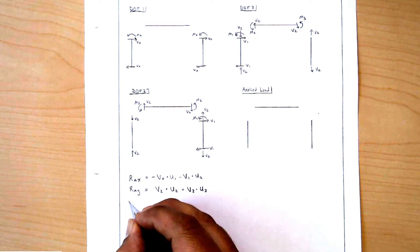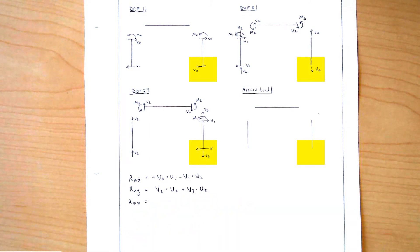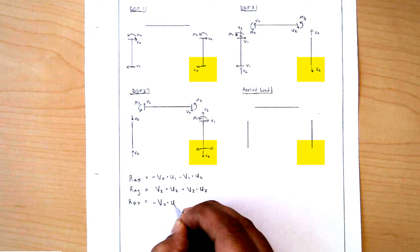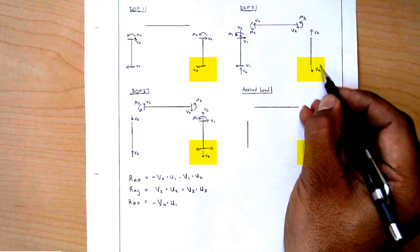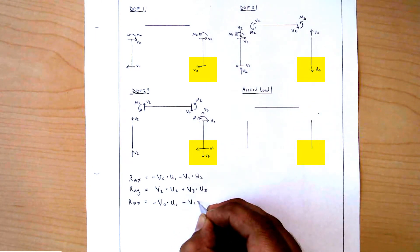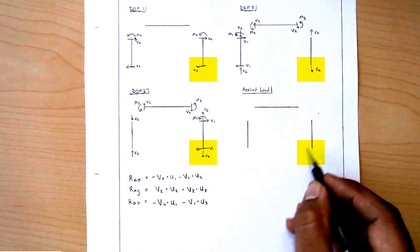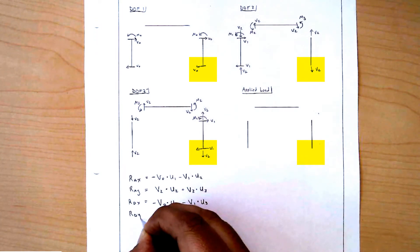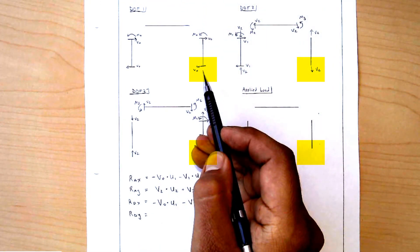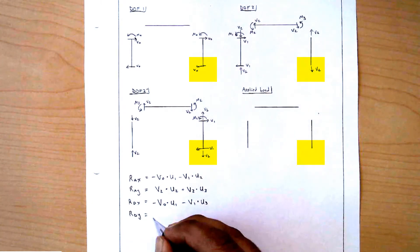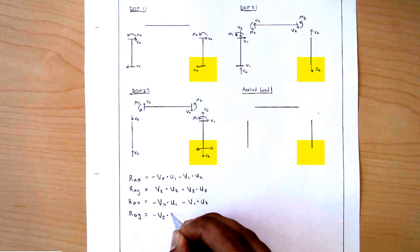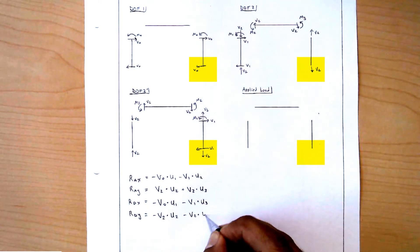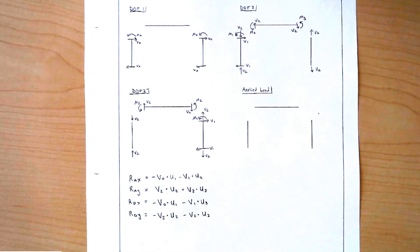Now let's look at the horizontal reaction at D. We have minus V0 scaled by U1 from DOF1, no contribution from DOF2, minus V1 scaled by U3 from DOF3, and no contribution from the applied load. Lastly, for the vertical reaction at node D, for DOF1 there's no contribution; for DOF2, we have minus V2 scaled by U2; and for DOF3, we have minus V2 scaled by U3. Shortly, we'll plug in values for all of these expressions.